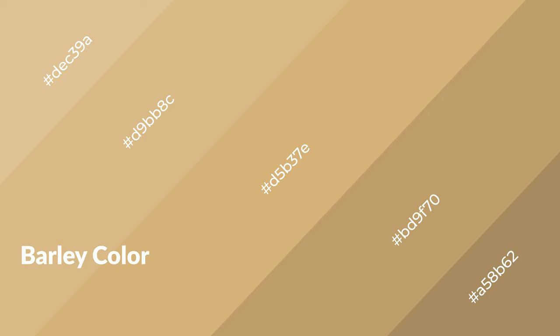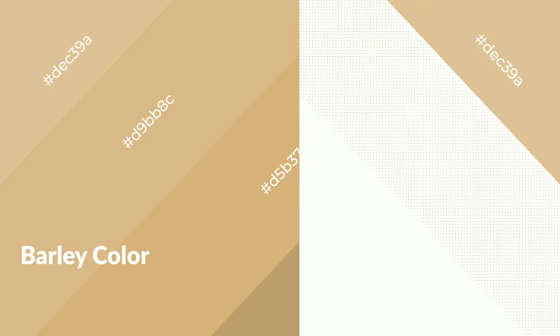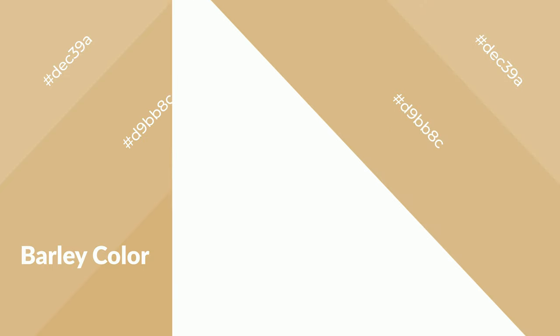To generate shades of a color, we add black to the color. It is used in patterns, 3D effects, and layers. Shades create depth and drama. Barley is a warm color and it emits cozier and active emotions. Warm colors are symbols of warmth, fire, heat, and sunshine.